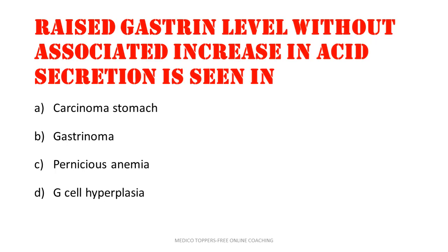Elevated gastrin level without associated increase in acid secretion is seen in: carcinoma stomach, gastrinoma, pernicious anemia, or G cell hyperplasia. Acid secretion is not increased, only gastrin secretion is increased. That can be seen in case of pernicious anemia.